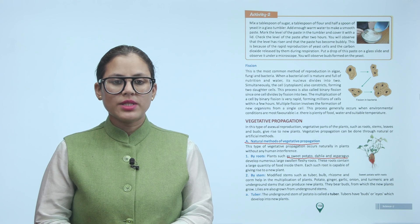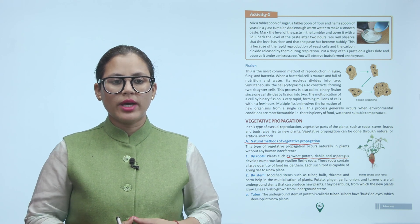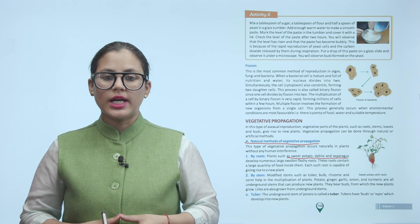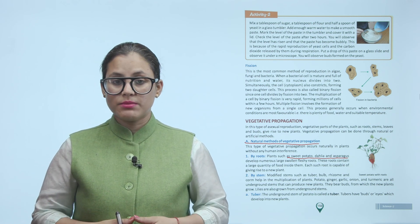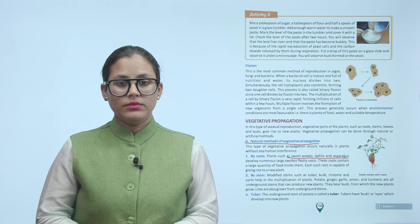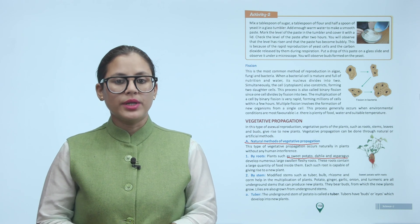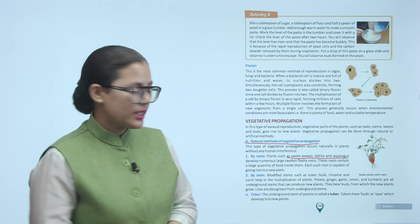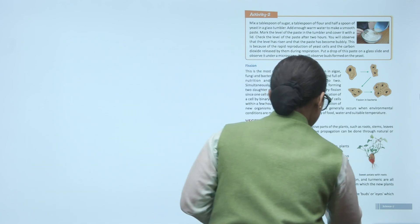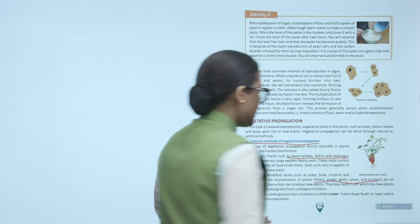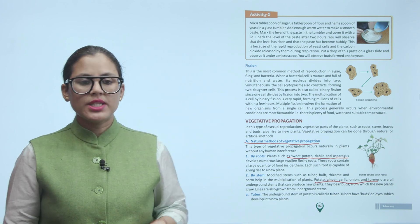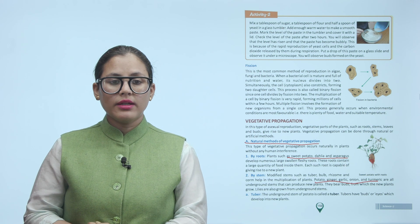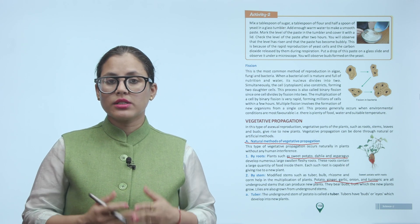By stem — modified stems such as tuber, bulb, rhizome, and corm help in the multiplication of plants. Potato, ginger, garlic, onion, and turmeric are all underground stems that can reproduce new plants. They bear buds from which new plants grow. Lilies are also grown from underground stems. The underground stem of a potato is called a tuber; it has buds and eyes which develop into new plants.